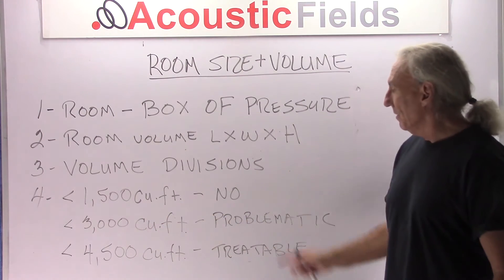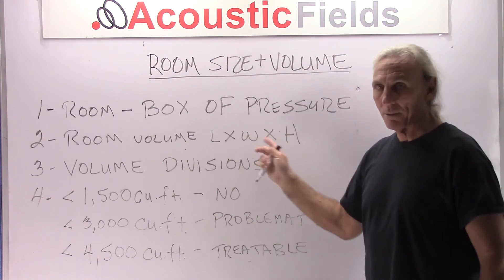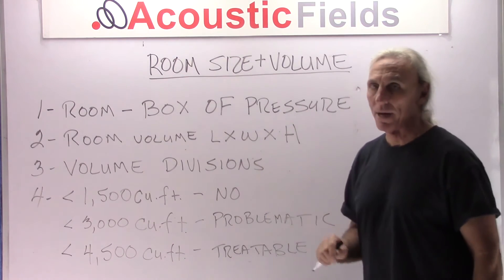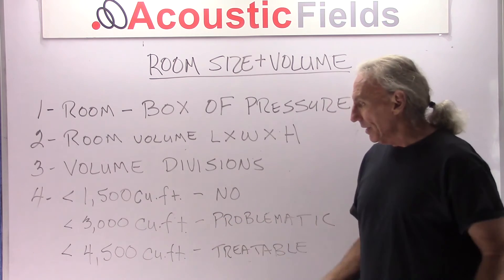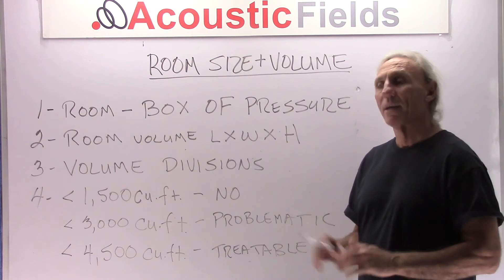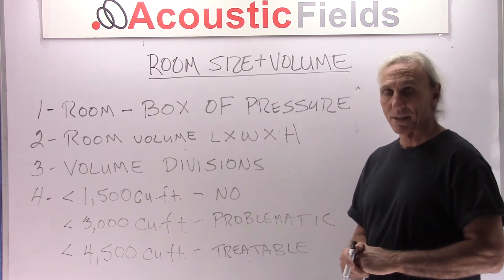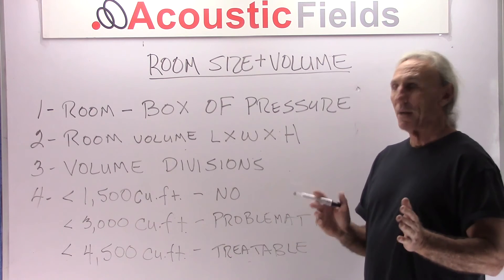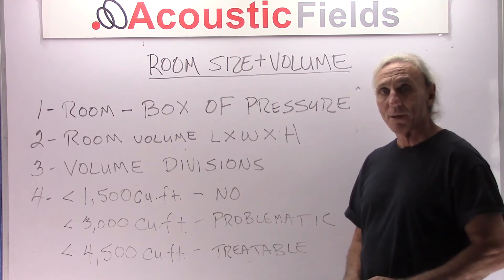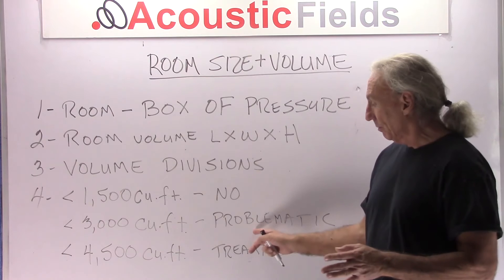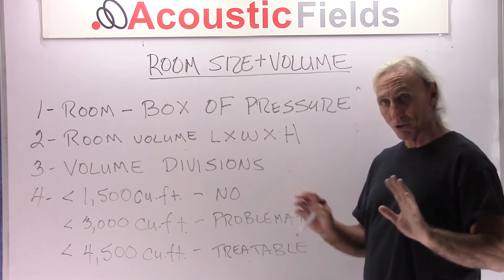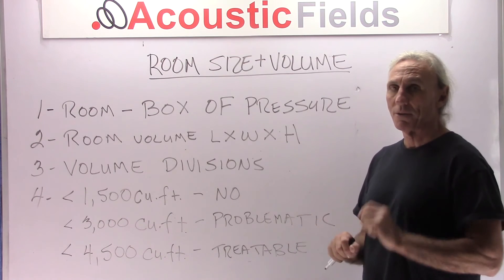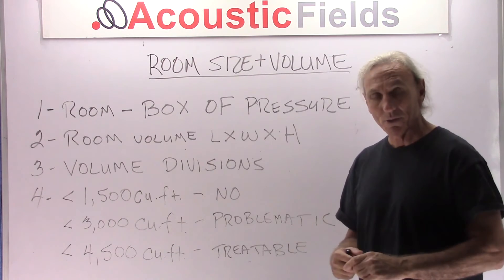Less than 3000 cubic feet — now these can vary in length, width, and height, but it's the cubic feet we're looking at because we're talking about a box of pressure. Less than 3000 cubic feet is problematic. Yes, it can be treated depending on the usage and what you're trying to achieve in that room. Less than 3000 cubic feet works for some usages but not for others — it's treatable depending on the usage, and you have to figure out what you're trying to do versus how much treatment you're going to need.